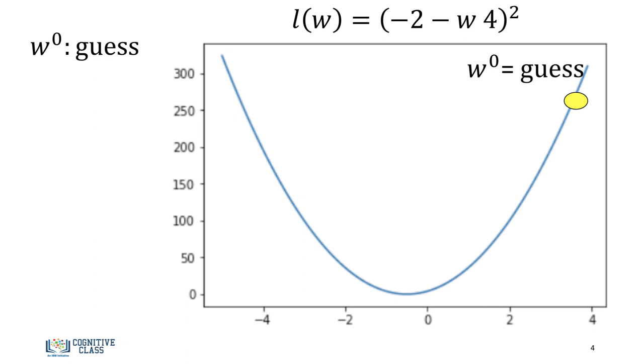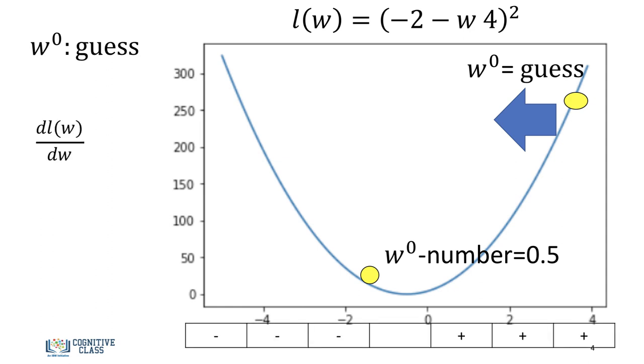Similarly, if we're on this side of the function, we'd like to move in the negative direction. So we can do this by adding a negative number. Examining the sign of the derivative, we see it's opposite to the sign of the number we would like to add. Therefore, we can simply add a number proportional to the negative of the derivative.